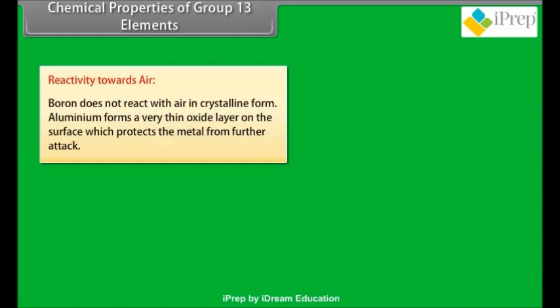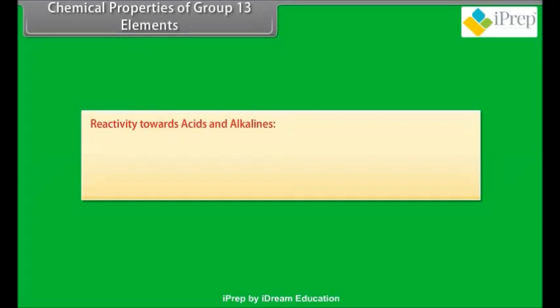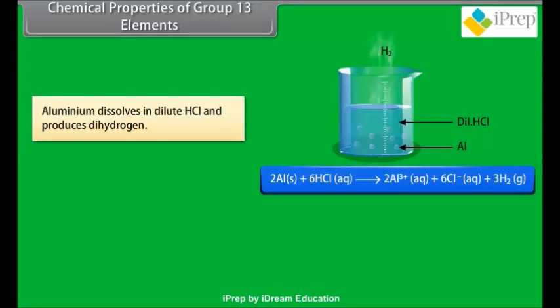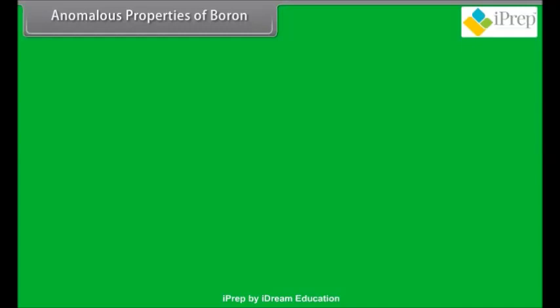Chemical properties of group 13 elements. Reactivity towards air: boron does not react with air in crystalline form. Aluminum forms a very thin oxide layer on the surface which protects the metal from further attack. Amorphous boron and aluminum metal on heating in air form B2O3 and Al2O3. With dinitrogen at high temperature, they form nitrites. Reactivity towards acids and alkalines: boron is unreactive with acids and alkalies even at moderate temperature. Aluminum shows amphoteric character and dissolves in mineral acids and aqueous alkalies. Aluminum dissolves in dilute HCl and produces dihydrogen. Reactivity towards halogens: boron family elements react with halogens to form trihalides.